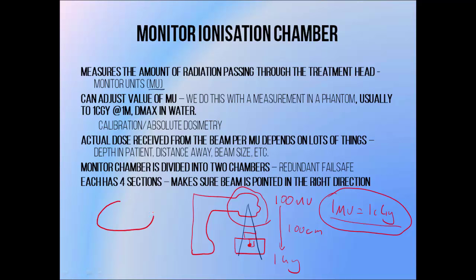The monitor chamber is divided up into two sections, each providing its own independent measure of the amount of radiation passing through the treatment head. This is because if the monitor chamber system broke and stopped recording signal, the beam wouldn't turn off after delivering the required amount of radiation, and we'd keep irradiating the patient with a massively high dose. Having two means that if one breaks, the other will turn the beam off at around about the right time. In practice one chamber does the work most of the time, and another is set to turn the beam off at a dose 10% higher than the primary chamber, so that if something goes wrong there's something there to catch it. Each chamber is also split into four sections, allowing it to determine if the beam is pointed in the right direction.